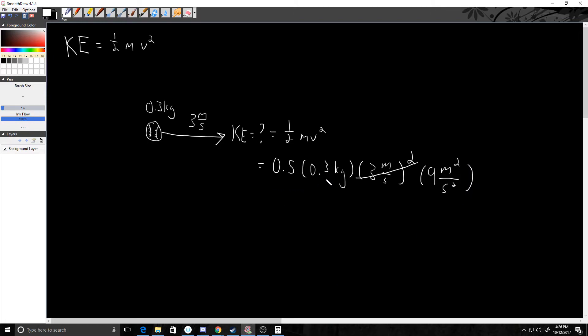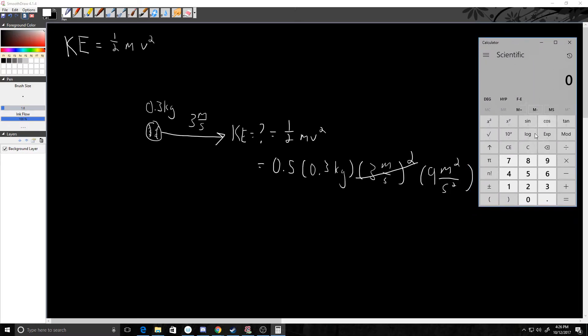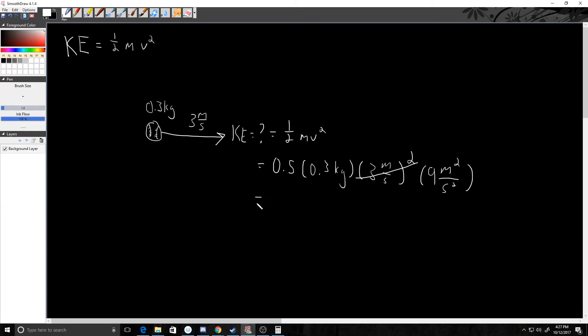So 0.5 times 0.3 times 9. Let me get out my trusty calculator here. Alright, so we have 0.5 times 0.3 times 9. It looks like we're going to have a kinetic energy of 1.35 joules.